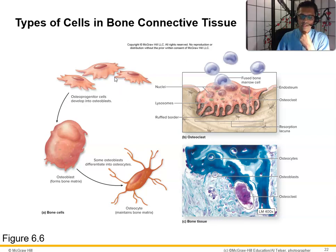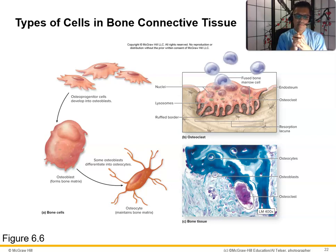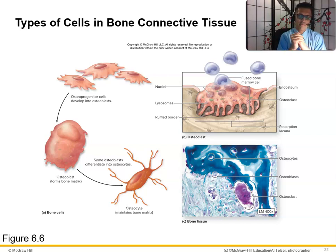Summary of bone cells: osteoprogenitor cells are the stem cells; osteoblasts form bone matrix; some osteoblasts turn into osteocytes which maintain bone matrix. We also need osteoclasts to break down bone — without that balance, making too much bone can lead to conditions like acromegaly, seen in some very large athletes. It's caused by hypersecretion of growth hormone, causing osteoblasts to deposit bone at a higher rate.